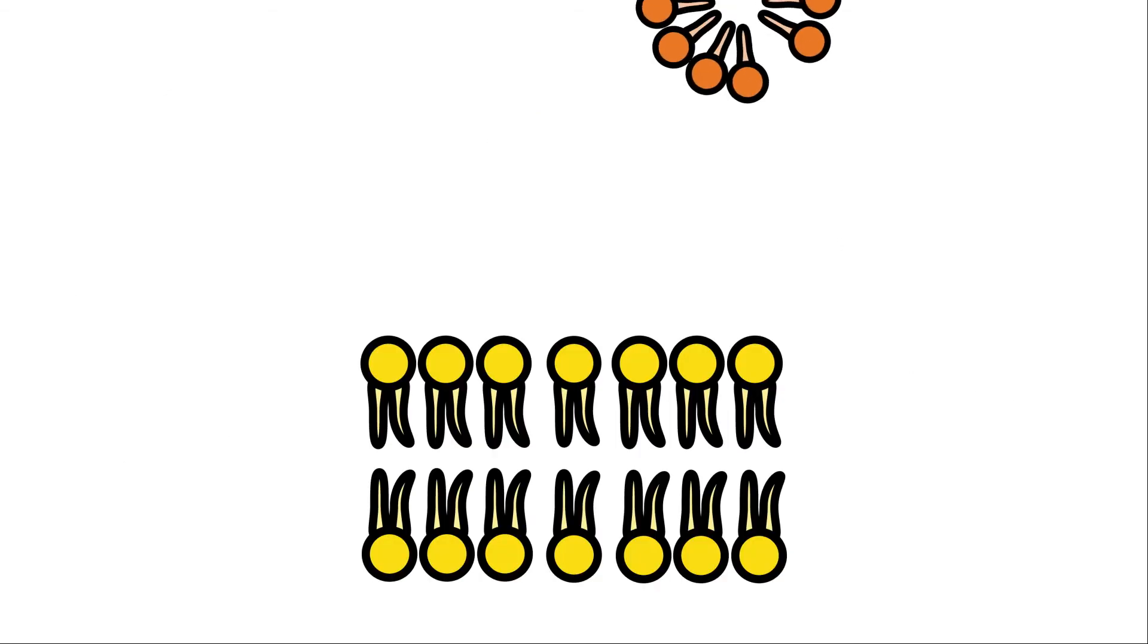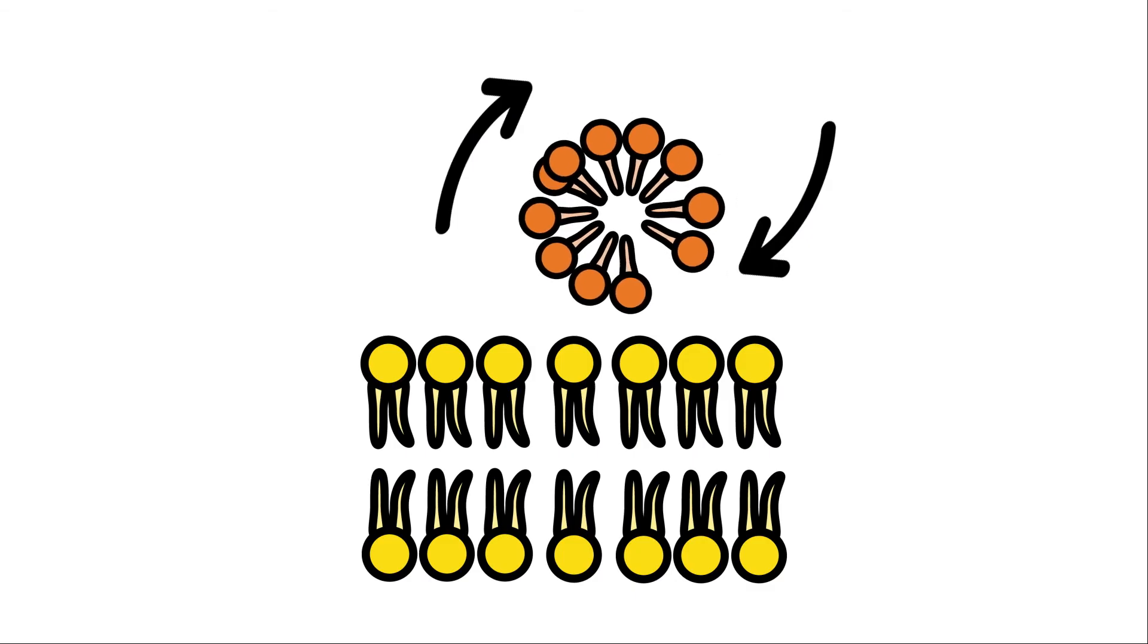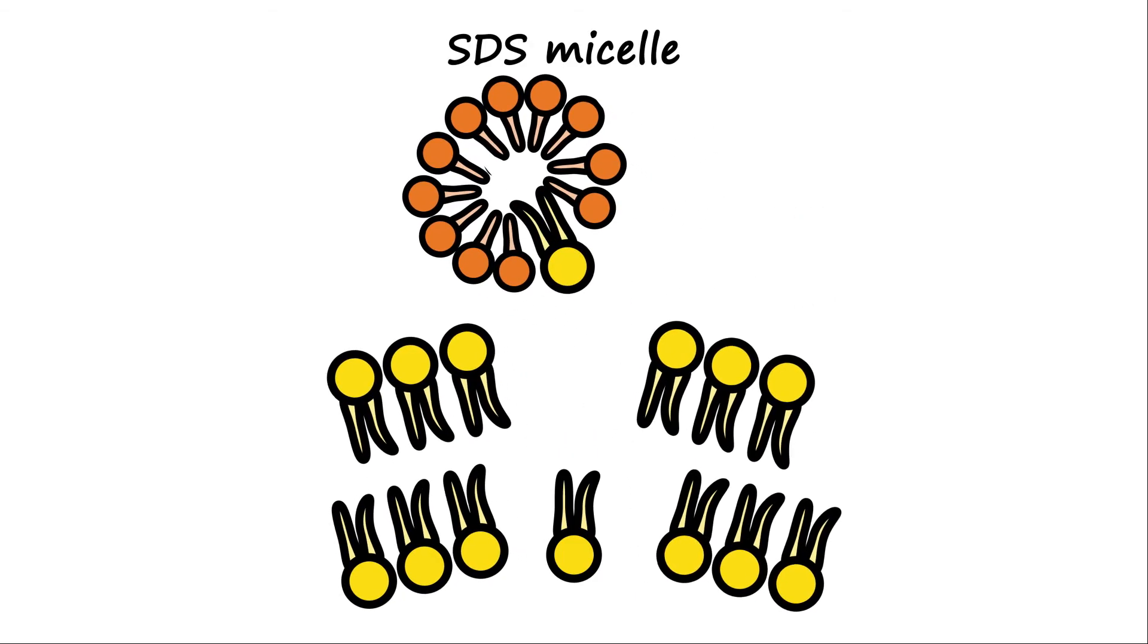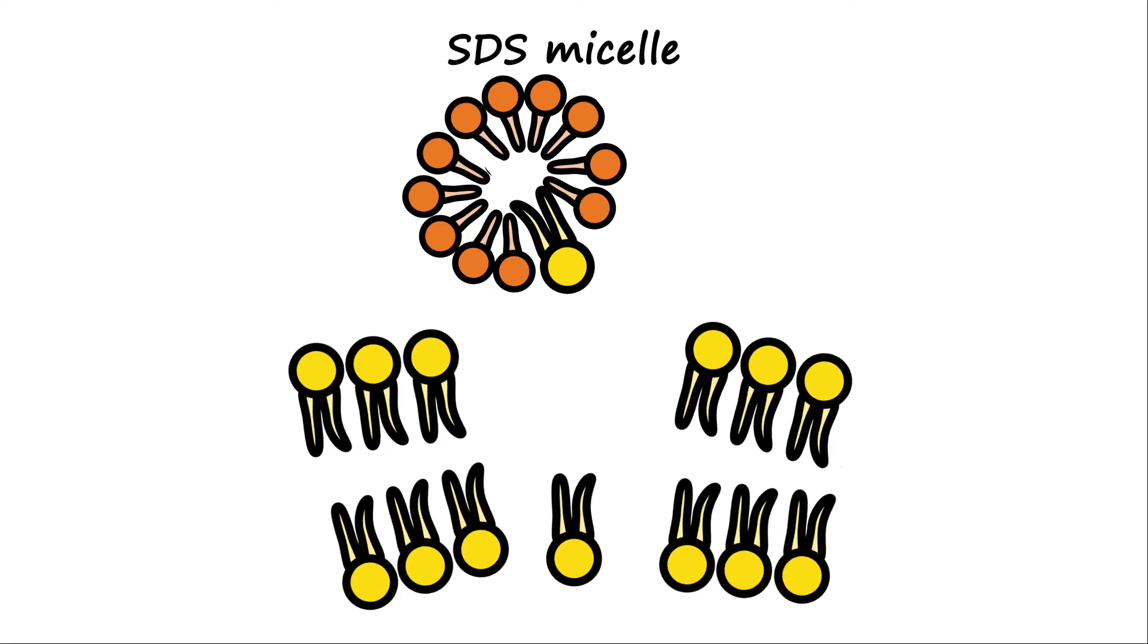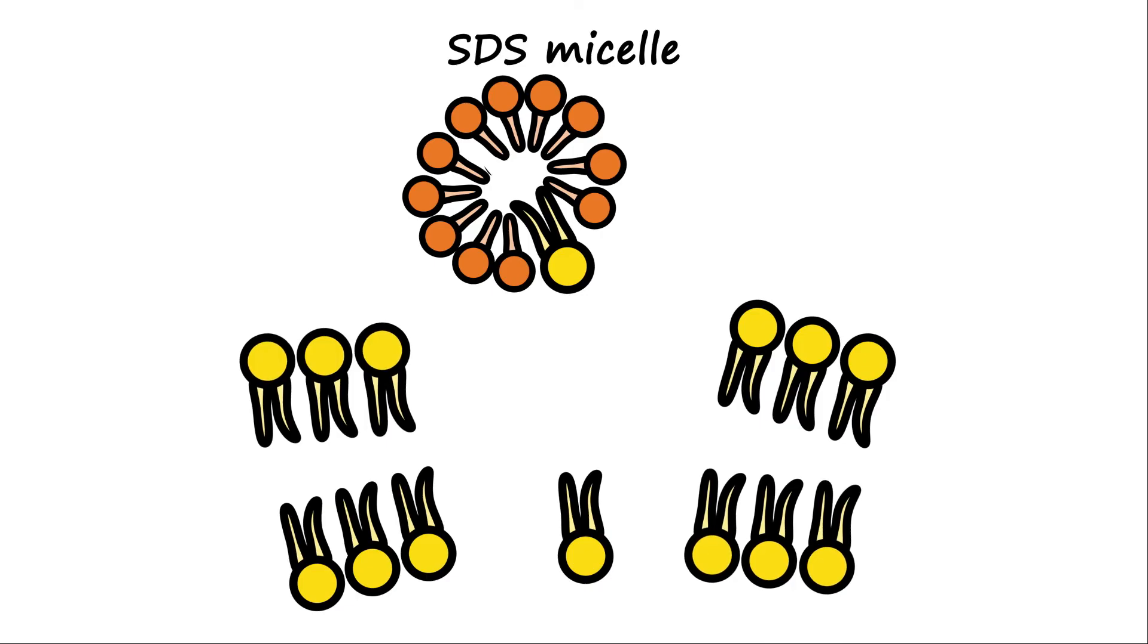Second, SDS micelles can extract lipids from the membrane, which causes an asymmetry in the bilayer, also leading to curvature stress. The diluted and stressed cellular membrane is lysed.